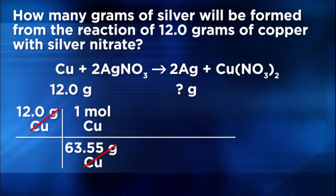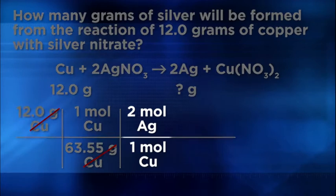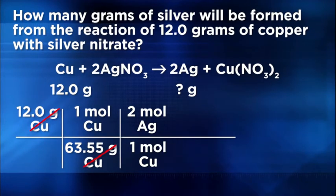Once we have moles of the substance that the problem gave us information about, copper, we can then use the mole ratio step to convert to moles of the substance we're seeking from the problem, in this question, silver. Remember, these numbers come from the coefficients in the balanced equation. One, understood for copper, and two for silver. And don't forget to cancel the units as you proceed through the calculation.